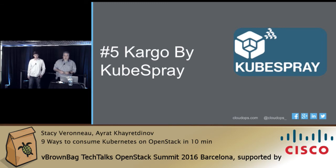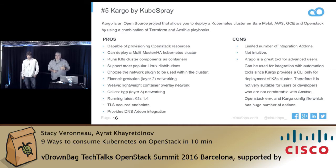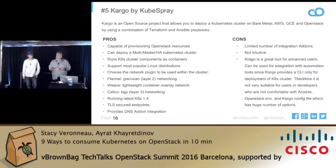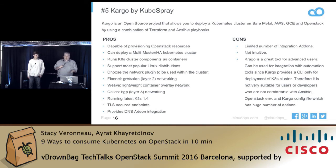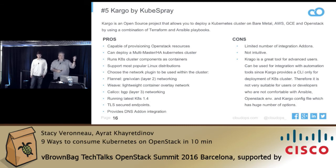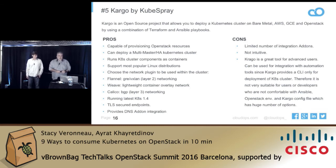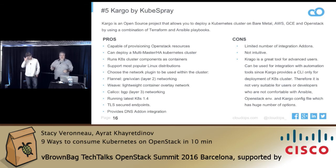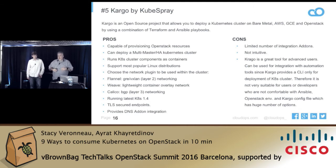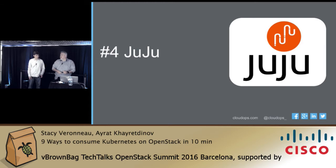Number five is Kubespray — this is actually the first one I used personally and I just loved it. It's really an all-in-one deployment; you get all the latest and greatest, though if you're stuck on a specific release like 1.3, that's an issue. It gives you DNS, the front end, Weave or Flannel, and you can put Calico in for Layer 3 BGP networking. The main downside: it's not intuitive — if you don't know what you're doing with the config, it's a challenge, but once you get through it, it's an awesome tool.